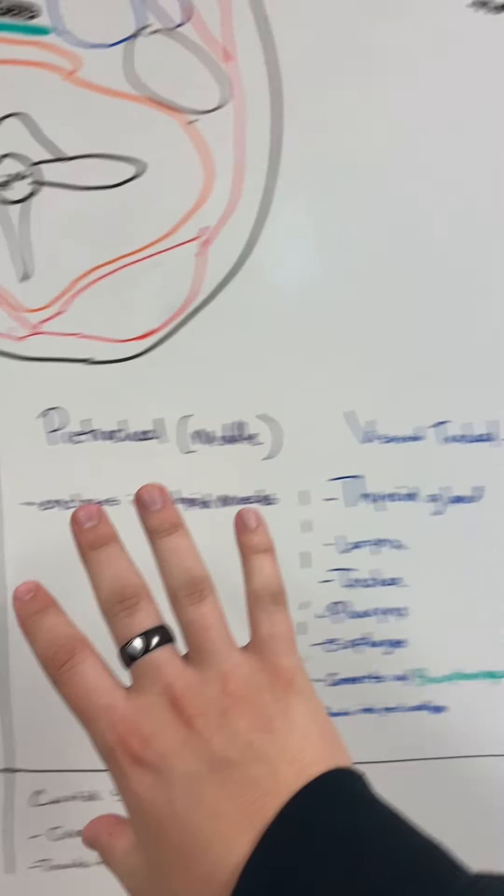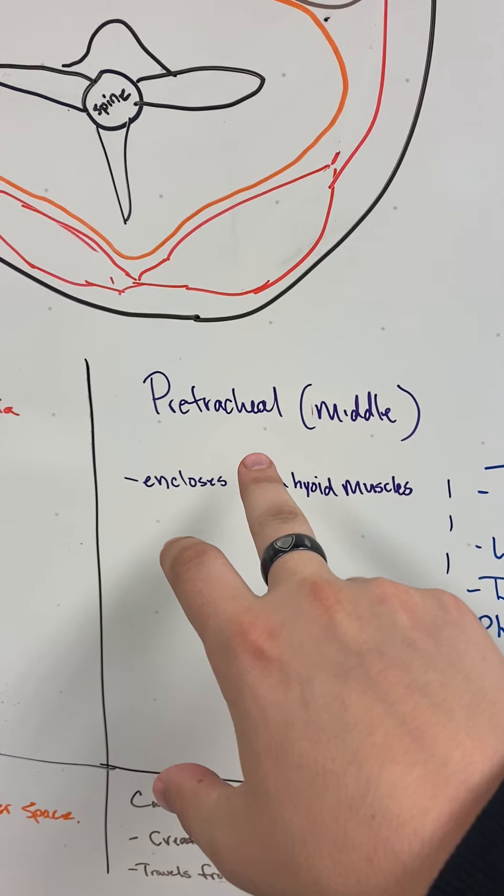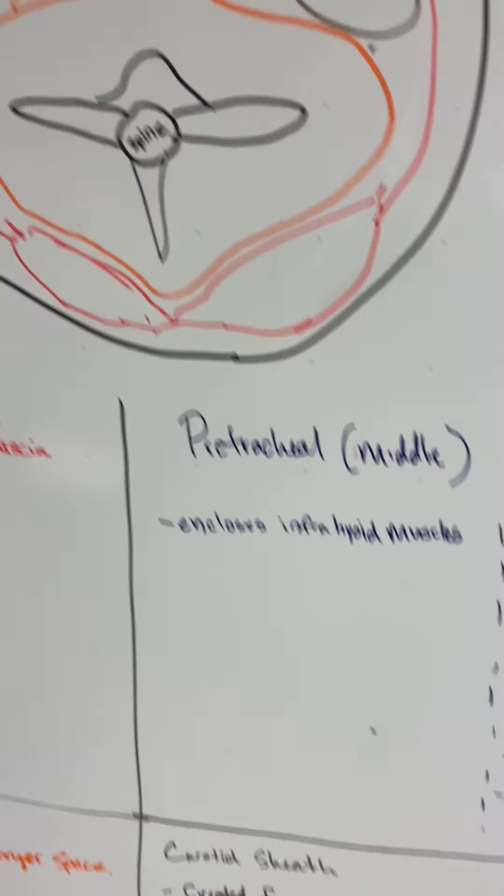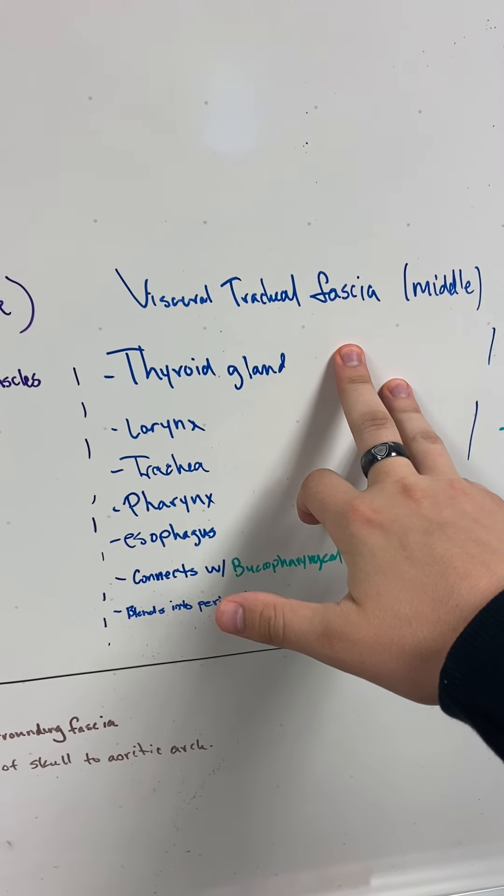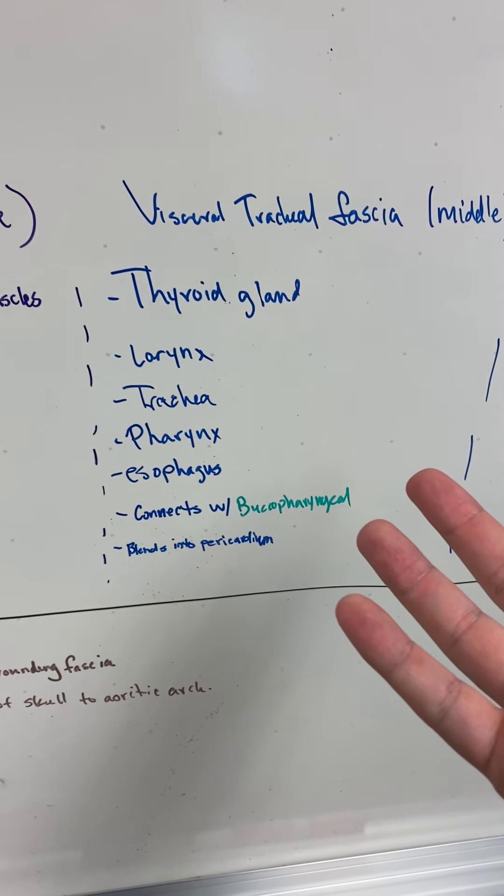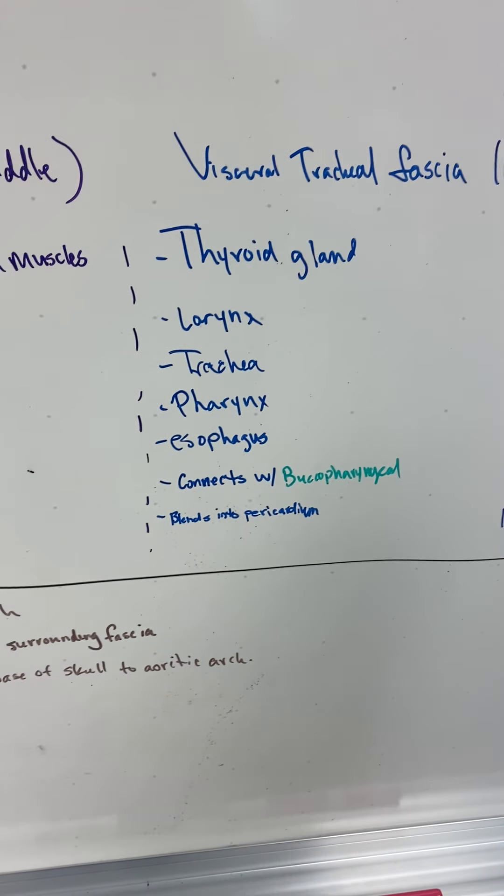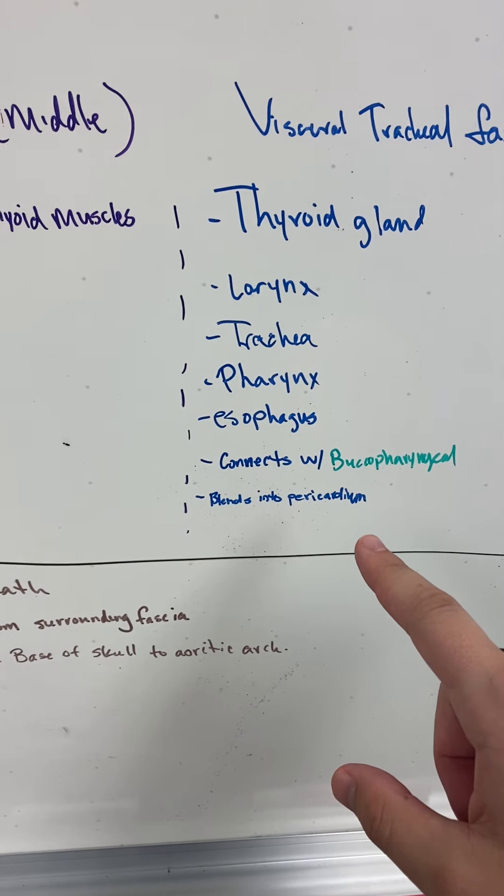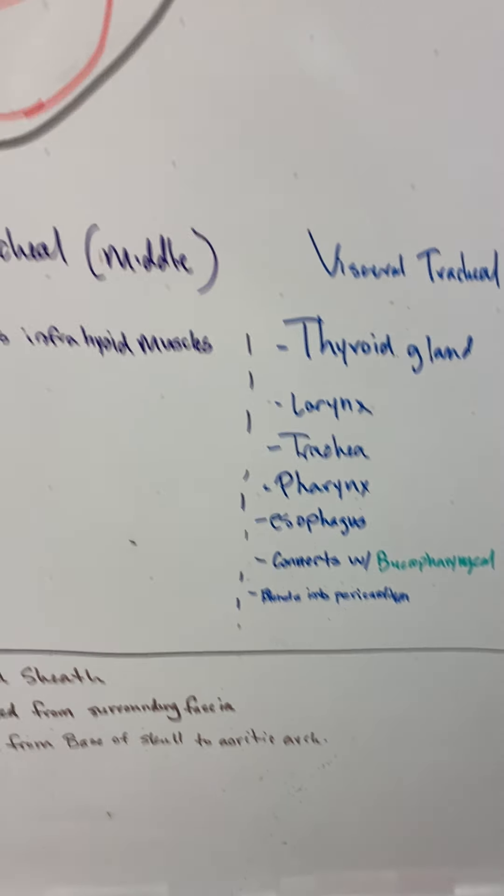So this is that first layer. These next three are the middle layer, or the second layer. Pre-tracheal is just in front of the trachea; it encloses the infrahyoid muscles. There's a visceral tracheal fascia, which is probably the one that has the most stuff in it: thyroid gland, larynx, trachea, pharynx, esophagus. It connects to the buccopharyngeal, which is the next guy, and then it goes all the way down into the pericardium, down our chest.